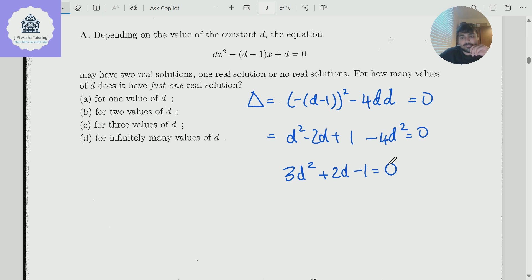And the question is, how many values of d satisfy this equation? This does factorize. I notice that when I substitute d as minus 1 into this, I get 3 minus 2 minus 1. So that tells me that d plus 1 is a factor. And then I also notice that I can just do 3d minus 1 equals 0.